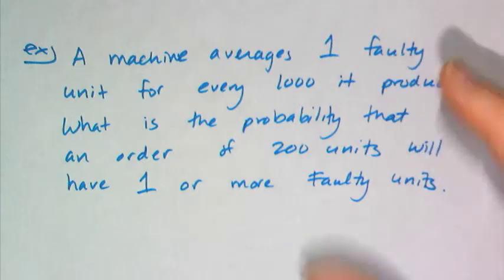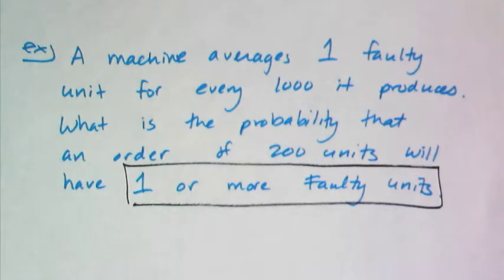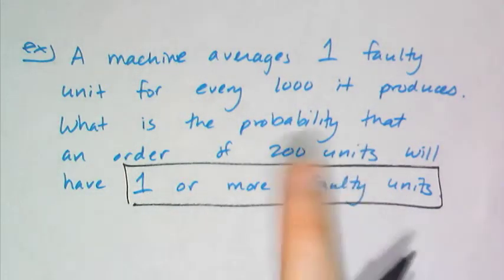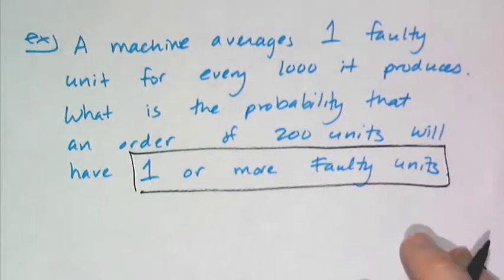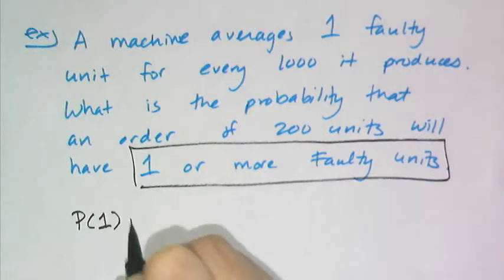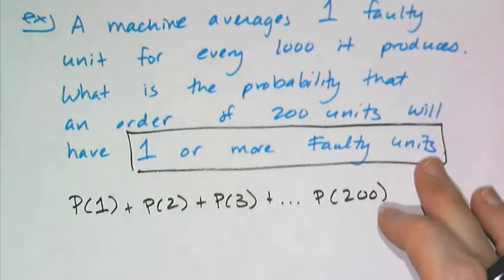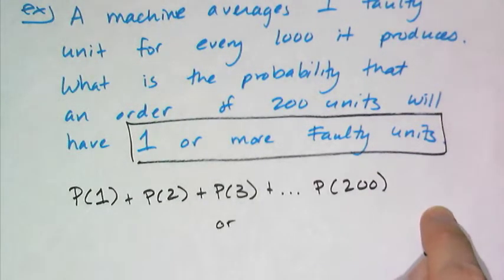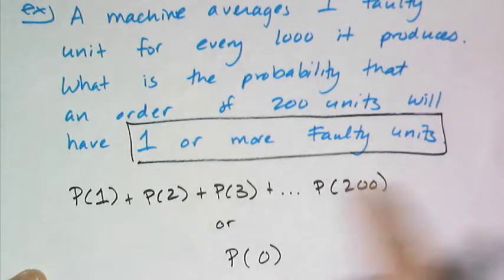If you come across a problem like this, where you're like, oh my gosh, I gotta figure out 199 probabilities, or 200 probabilities, don't. That means I want you instead to use the complement. So you think about the opposite of this. The complement of one or more faulty units includes one faulty unit to 200 faulty units. What's not included here? The probability that I have no faulty units. So I have two options. If I have a lot of free time, then I could find the probability that there's one, probability that there's two, probability that there's three, so on and so forth, up to the probability that they're all faulty, which would be horrible. Or I could realize that the one case missing here is the probability that none are faulty.